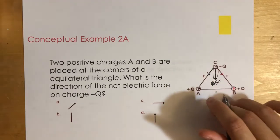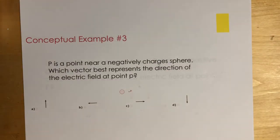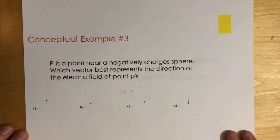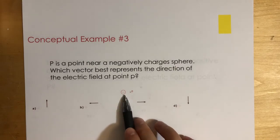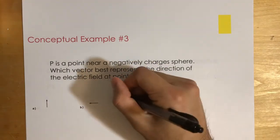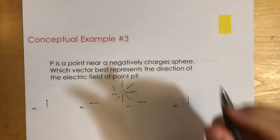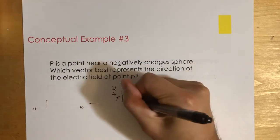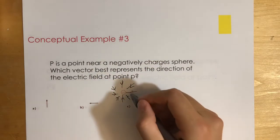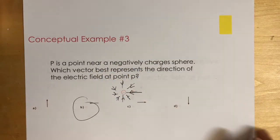The answer is B. Now let's look at the next example. Point P is near a negatively charged sphere. Which vector best represents the direction of the electric field? For a negatively charged object, the electric field points inward toward the charge. So at point P, the field points to the left. The answer is also B.